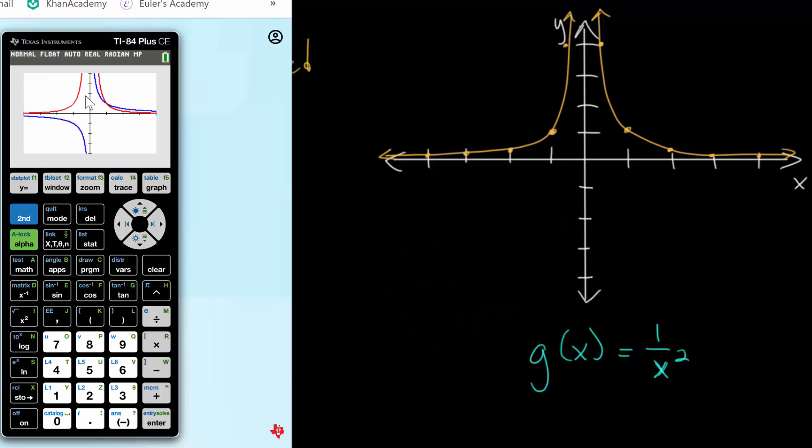Looking at the graph, this red curve, if we trace, here's the red curve, that is 1 over x squared. And this blue curve here, that's our 1 over x.